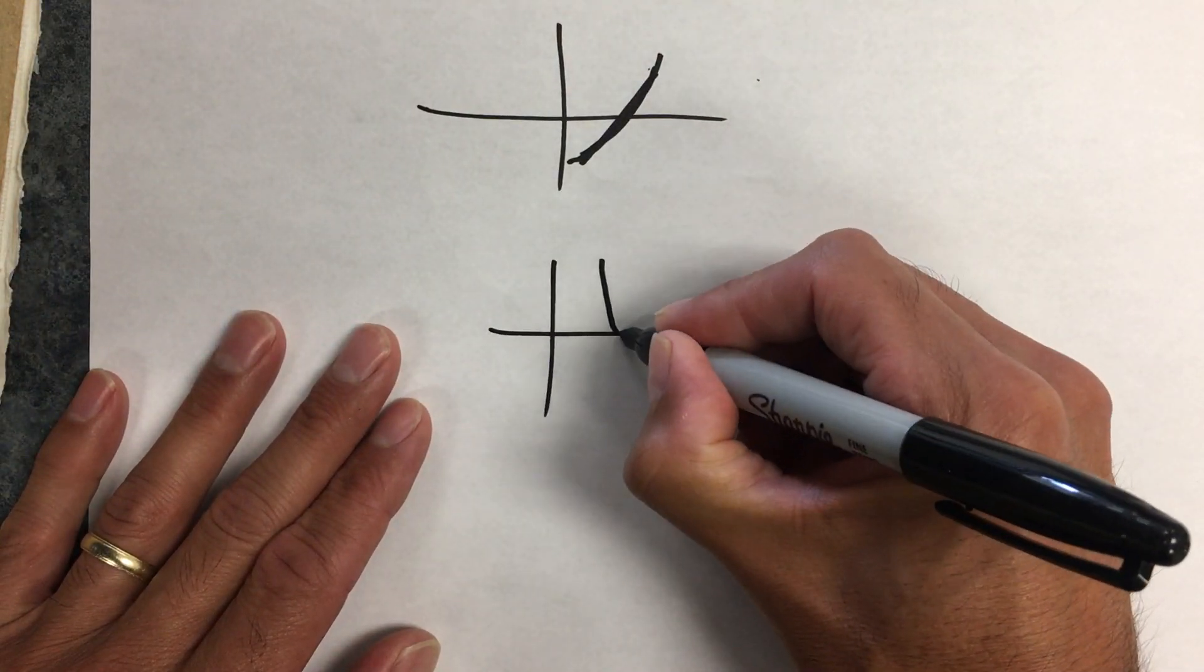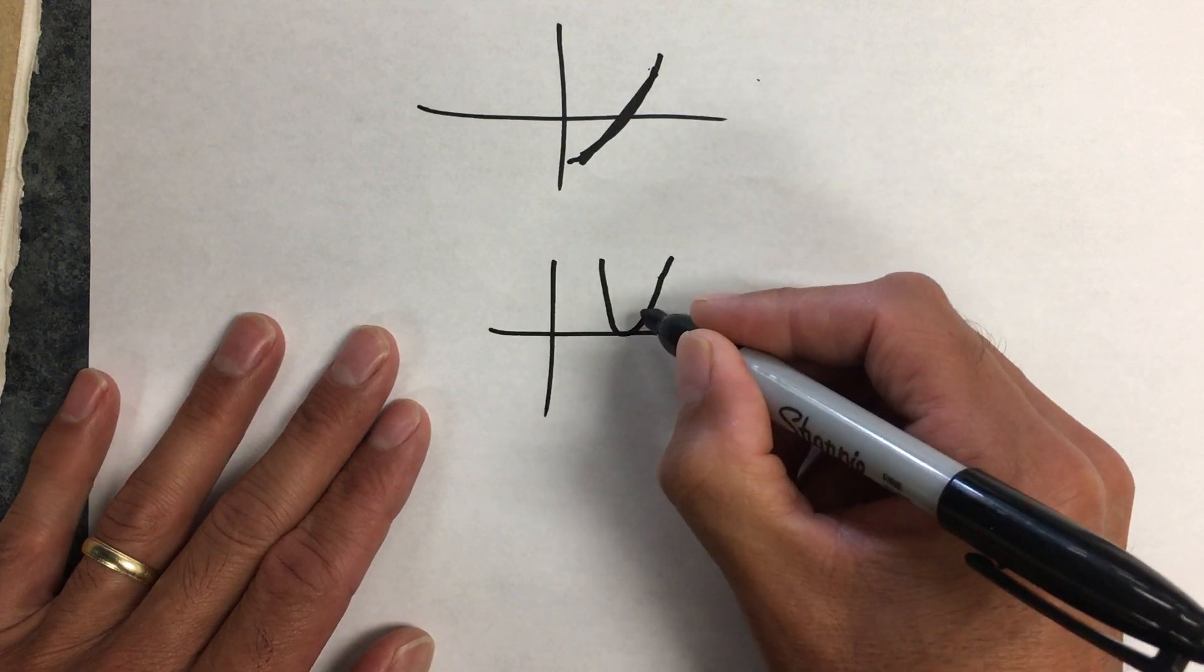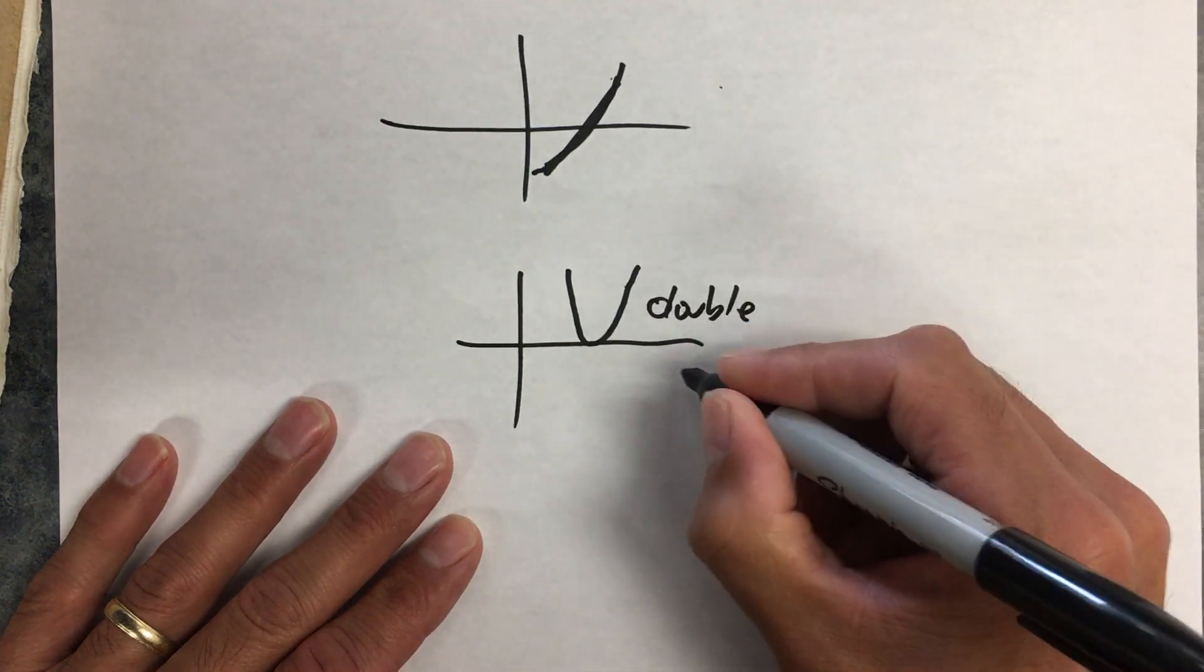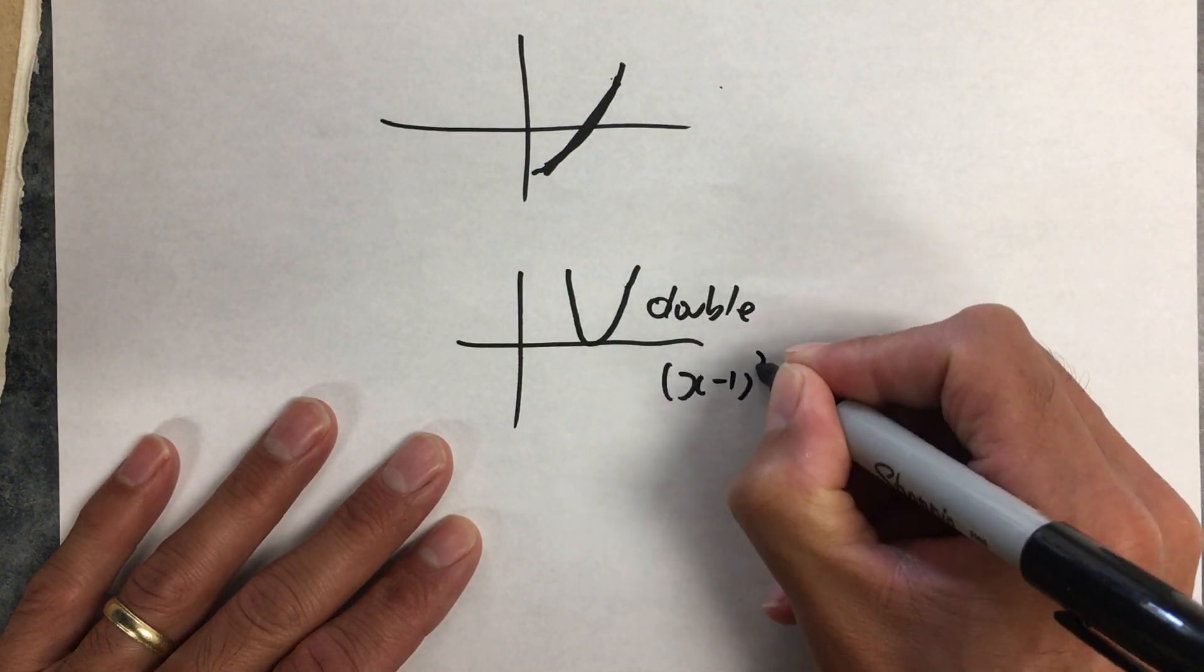If it bounces and looks like a parabola, that's a double root. So that would be something like (x - 1)².